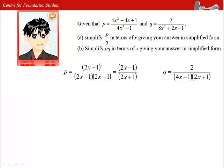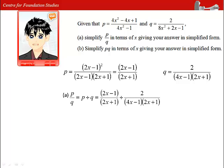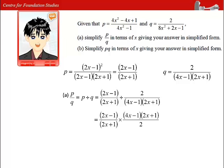Working on a, p over q can be written as p divided by q. We shall use the simplified p divided by the factorized form of q. Remember to swap the numerator and denominator of q when the sign is switched to multiplication.